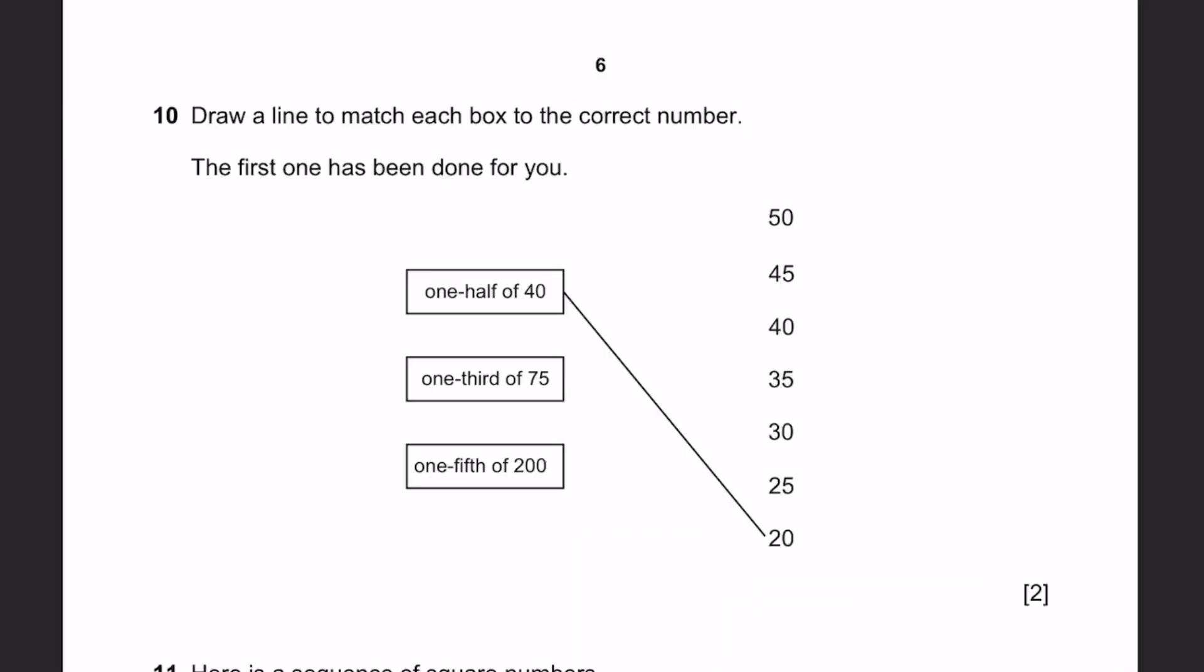Question 10. Draw a line to match each box to the correct number. 1 half of 40 would be 1/2 into 40, which is 20. 1 third of 75 would be 1/3 into 75, which is 25. And we can draw a line there. Next, 1 fifth of 200 would be 1/5 into 200. 200 divided by 5 is 40, so we can draw a line to 40 up there.